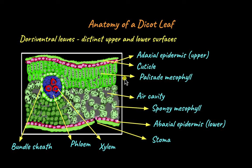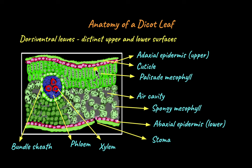In leaves, the parenchymatous cells that have chloroplasts are called mesophyll cells. In dicots, the mesophyll cells are differentiated into two types: palisade mesophyll and spongy mesophyll. The mesophyll cells that are close to the adaxial surface are called palisade mesophyll cells. These cells are elongated and are arranged close to each other with very little intercellular space. The chloroplasts are found at the top surface of the palisade mesophyll cells, close to the adaxial epidermis, which allows for optimal sunlight absorption.